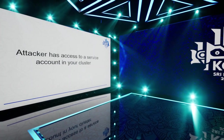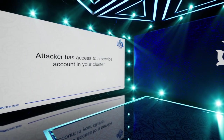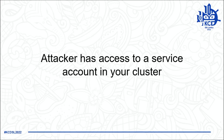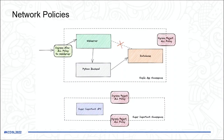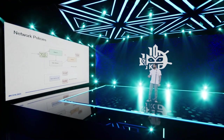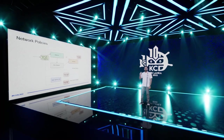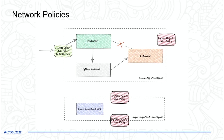The next scenario: the attacker has access to a service account in your cluster — they've gotten through the control plane and can talk to the Kubernetes API with some permissions. To address this, use network policies. For example, with a web server, a Python backend, and a database, there's no need for the web server to talk to the database. Network policies let you specify exactly which pod can talk to which service.